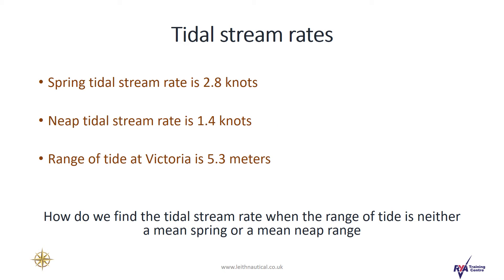In this example our spring tidal stream rate is 2.8 knots. The neap tidal stream rate is 1.4 knots and we have a range of tide of 5.3 meters. This makes it a big spring tide.